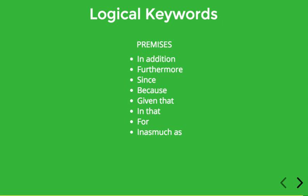Some of these can have different meanings in different contexts — 'for' obviously can mean a lot of different things. But if you say 'the party must have been fun, for everyone is leaving with a smile,' the phrase 'for everyone is leaving with a smile' is giving a reason to believe the party was fun. That's the sense in which 'for' can be used to signal a reason or premise.